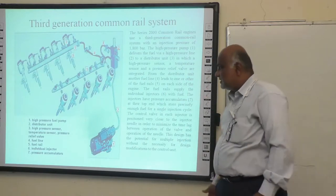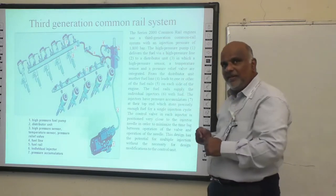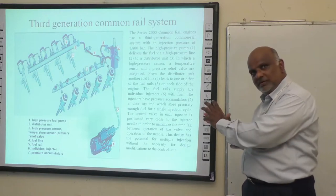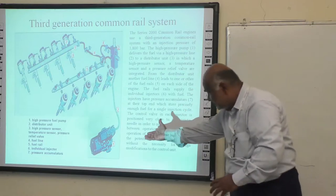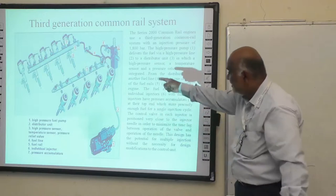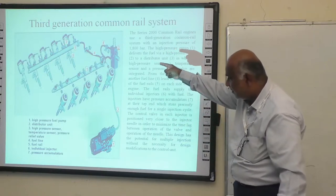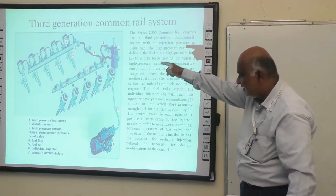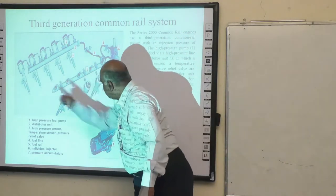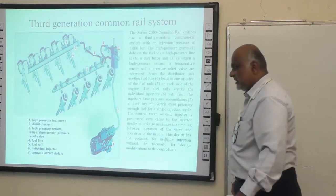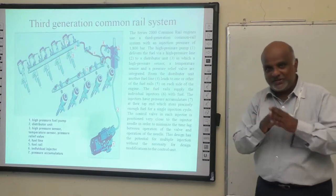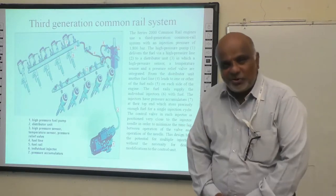Here is the third-generation Common Rail system. You just saw the line diagram, but here you can see the actual physical appearance. You can see the high-pressure fuel pump, then the distributor unit, then the high-pressure sensor, number four is the fuel line, number five is the common rail fuel rail, number six is the individual fuel injectors, and number seven is the pressure accumulator which maintains the pressure. With this, I conclude for today.